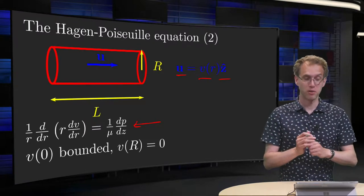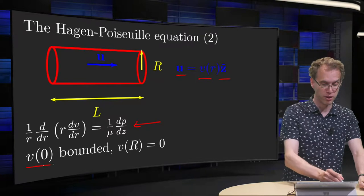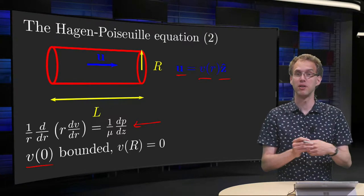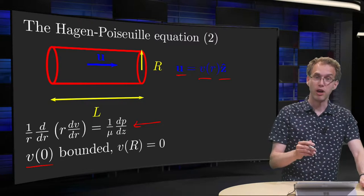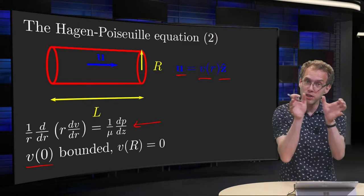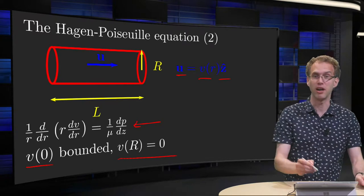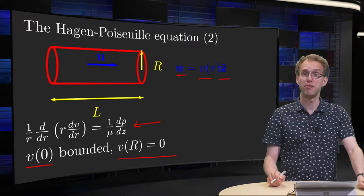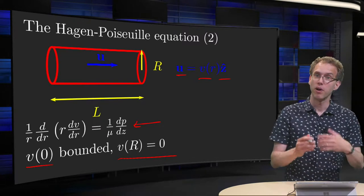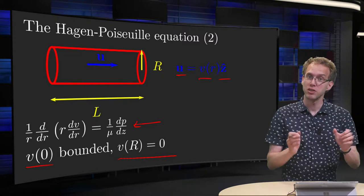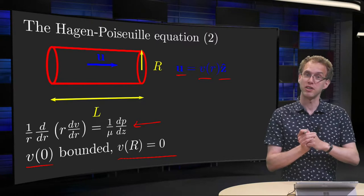We also need some boundary conditions. First of all, we will set V of 0 as bounded, obviously you need a bounded velocity, and furthermore, we will assume that the velocity on the boundaries of your cylinder V of R is 0. So here is where the physics is coming in. And then, our ODE has its two boundary conditions, so we can try to solve it.